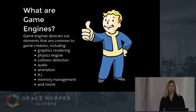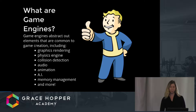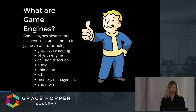Game engines are a software framework that are designed to abstract out elements that are common to video game creation and design. The functionality tackled in a game engine can include things like graphics rendering, the physics engine, collision detection, audio, scripting, animation, AI, memory management, and a whole lot more.